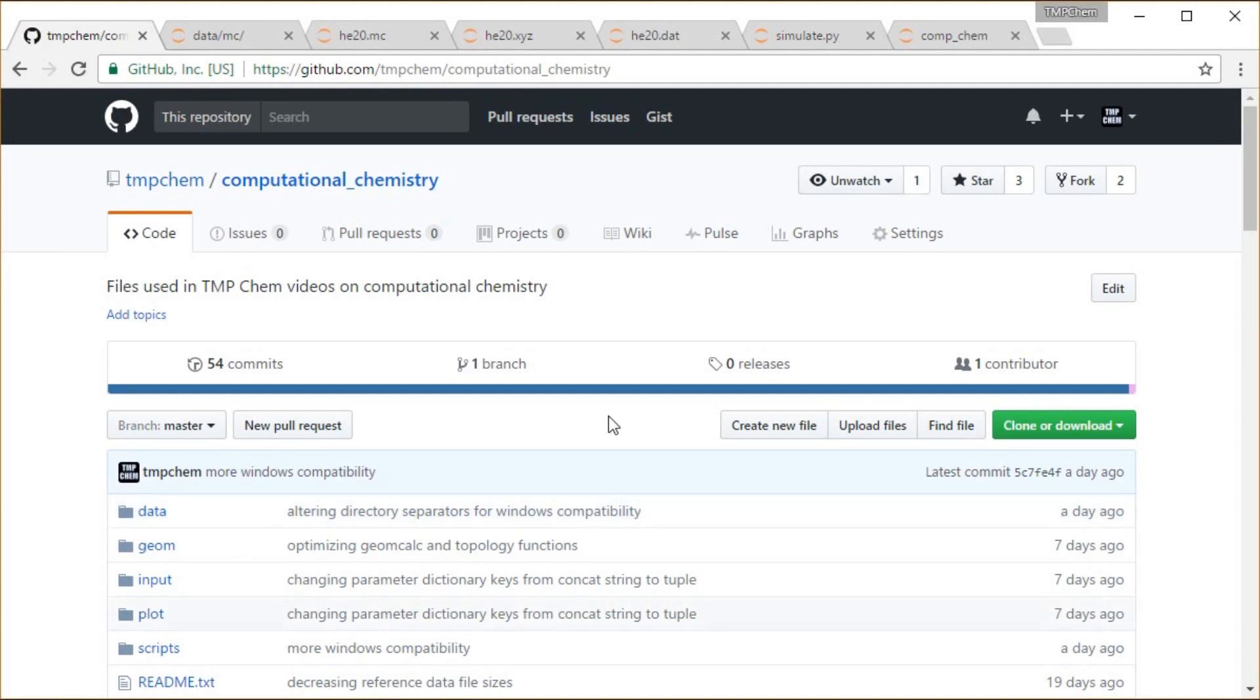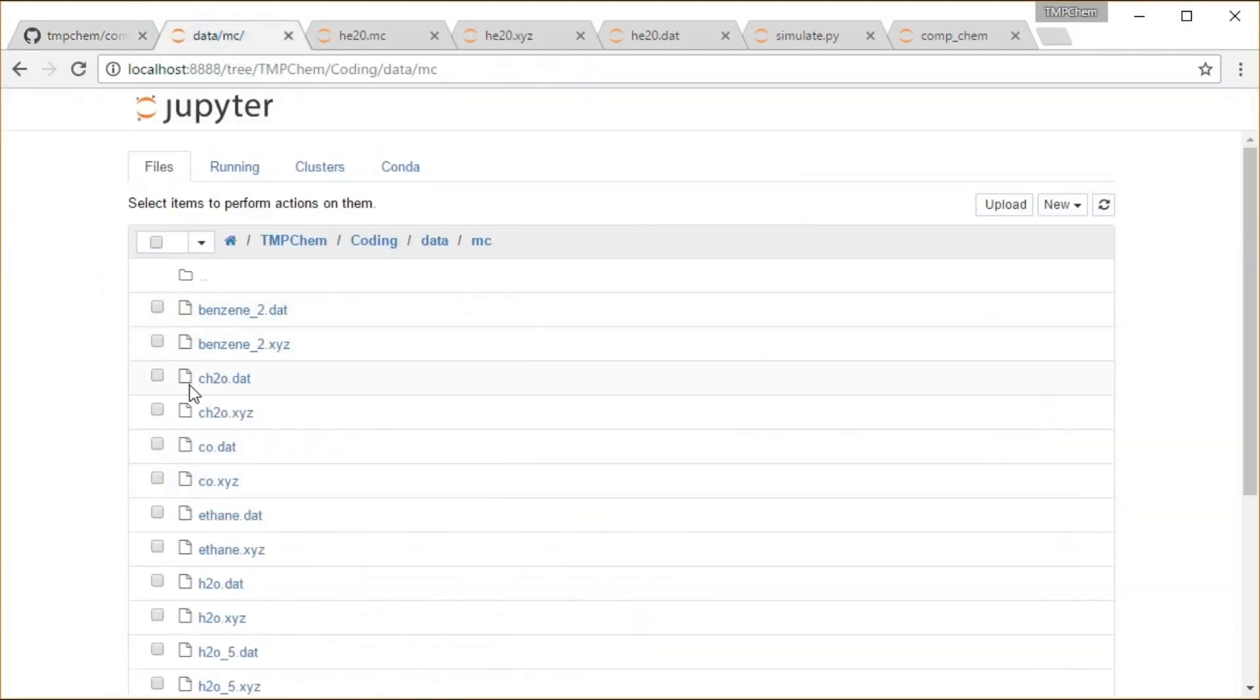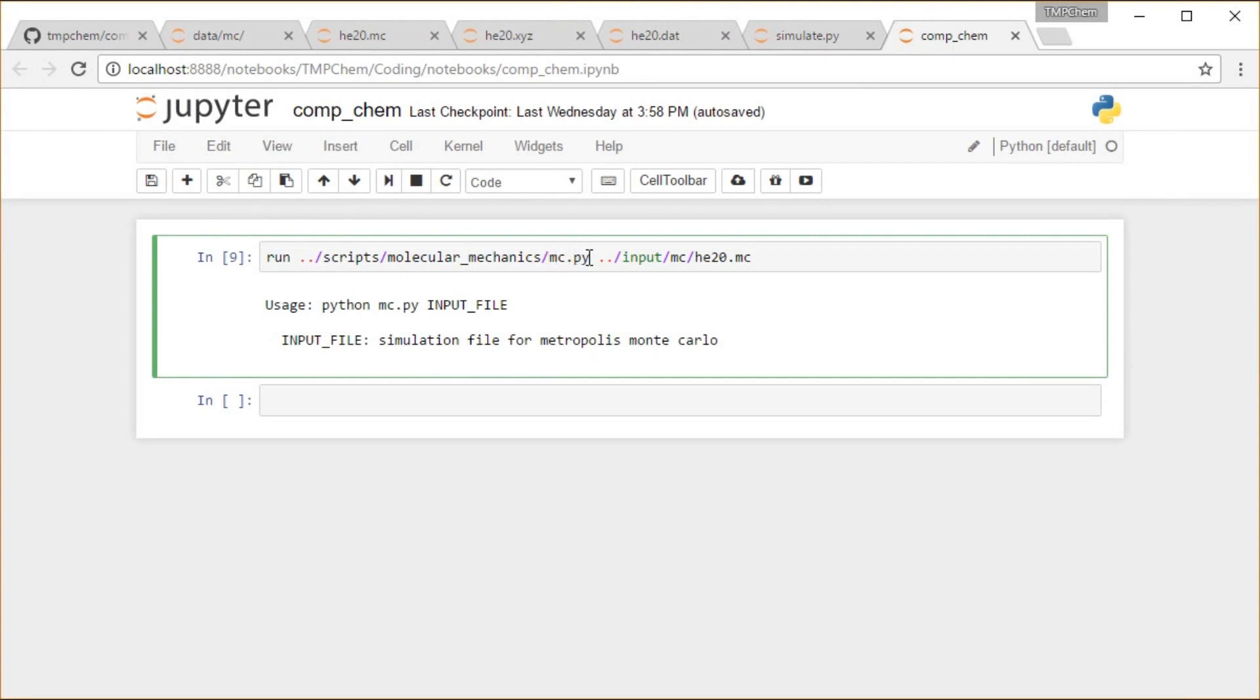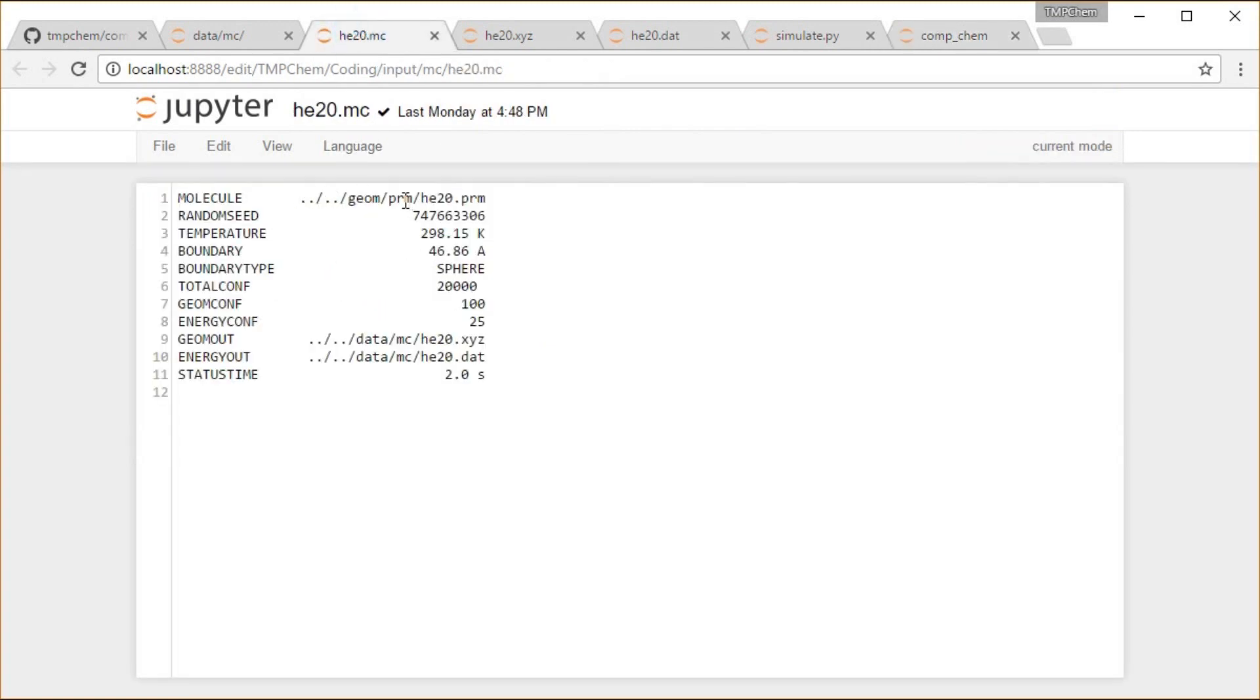On to some examples. My GitHub computational chemistry repository, in the data Monte Carlo or MC directory, we have the results of some Monte Carlo simulations. I have the mc.py program in the scripts molecular mechanics directory acting on the input mche20.mc file. We're going to run this on a file of 20 helium atoms at 298 Kelvin inside a sphere that's about 47 angstroms on each side, about the size that would include 20 helium atoms at about one atmosphere of pressure. We're going to do this for 20,000 configurations, print out the geometry every 100 configurations, print out the energy every 25 to files, and see how we're doing every two seconds.